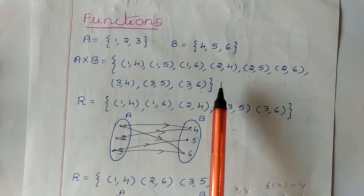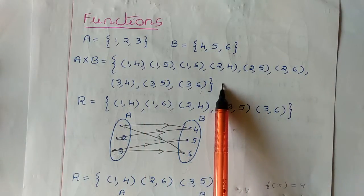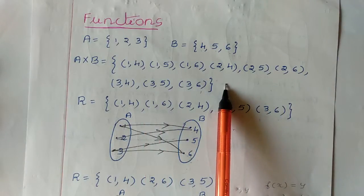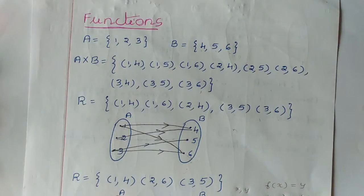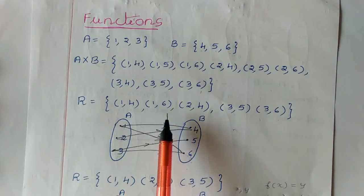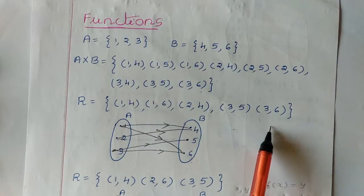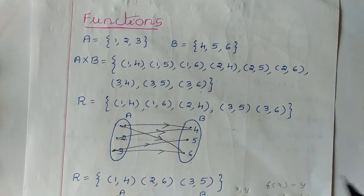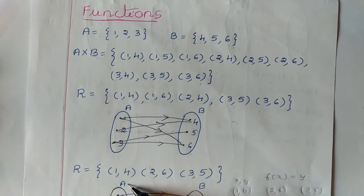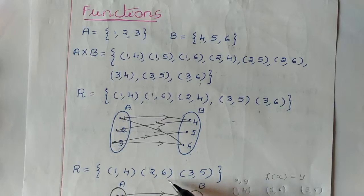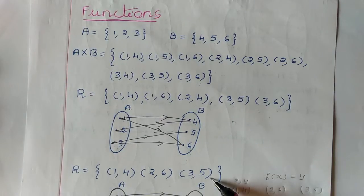Now from this Cartesian product A cross B, we will define two relations. One is R = {(1,4), (1,6), (2,4), (3,5), (3,6)} and the other relation is {(1,4), (2,6), (3,5)}.